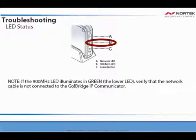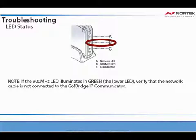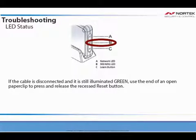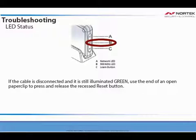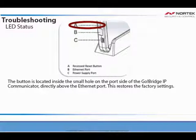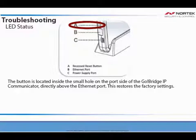Note that if the 900 MHz LED, the lower LED, illuminates green, verify that the network cable is not connected to the GoBridge IP Communicator. If the cable is disconnected and it is still illuminated green, use the end of an open paper clip to press and release the recessed reset button. The button is located inside the small hole on the port side of the GoBridge IP Communicator, directly above the Ethernet port. This restores the factory settings.